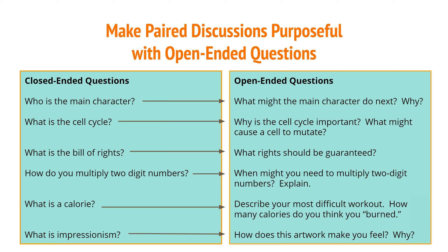What might the main character do next? Why? Why is the cell cycle important? What might cause a cell to mutate? What rights should be guaranteed? When might you need to multiply two-digit numbers?